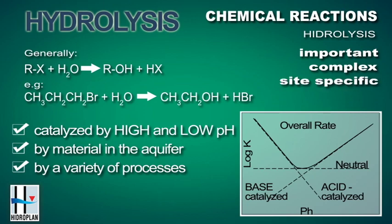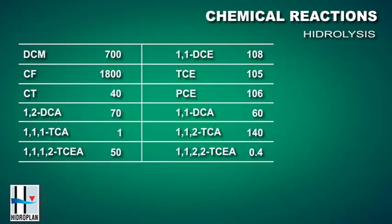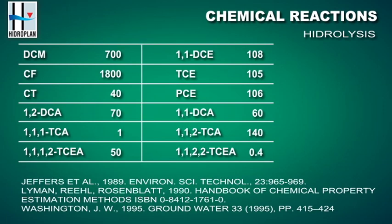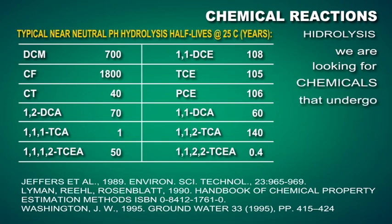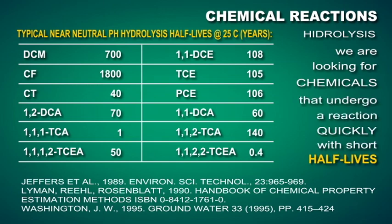Unfortunately, hydrolysis is rarely important — that is, it rarely occurs for the contaminants we're most interested in. Here's a table drawn from a number of sources for chlorinated solvents, important chemicals that we deal with. You can see the half-life at laboratory temperatures, about 25 degrees centigrade. Half-lives of hundreds or thousands of years aren't particularly useful to us; the reaction is too slow to be of significance. We're looking for chemicals that can undergo a reaction quickly with a short half-life.